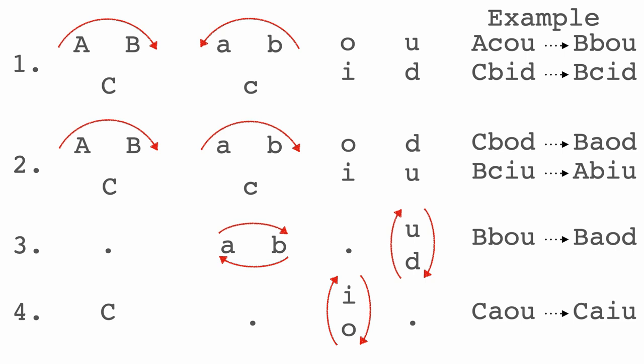Now we have four possible moves and are able to encode the positions the puzzle can take. At this point we are going to develop a graph representation of the positions the puzzle can take. Here is our initial position: A C O U.